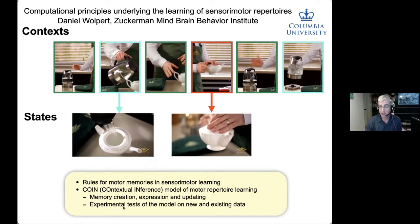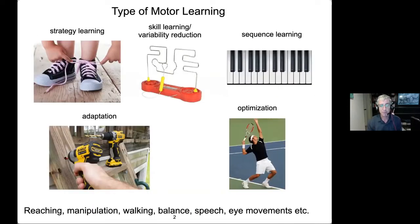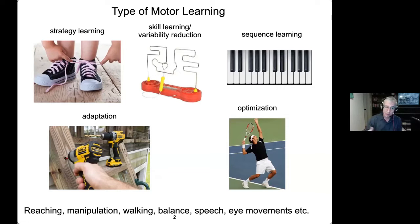Yesterday we talked about different forms of learning, and today I'm going to focus on adaptation. Adaptation is where you handle an object and have to adapt your motor commands to the physical properties of the objects. All these sorts of learning apply to reaching, manipulation, walking, balance, speech, eye movements, and so on. But we're going to focus on reaching because that's the main paradigm used to study adaptation.